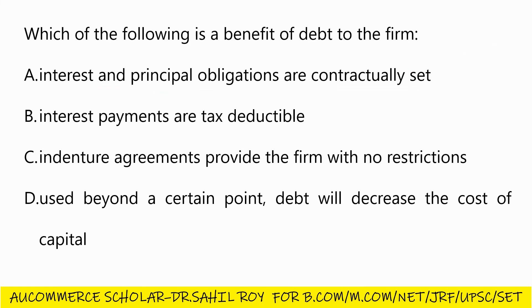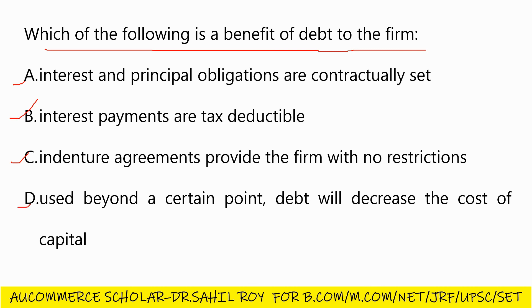Question number 80: which of the following is a benefit of debt to the firm — Option A: interest and principal obligations are contractually set; Option B: interest payments are tax deductible; Option C: indenture agreement provides the firm with no restrictions; Option D: beyond a certain point debt will decrease the cost of capital. The correct answer is Option B: interest payments are tax deductible.